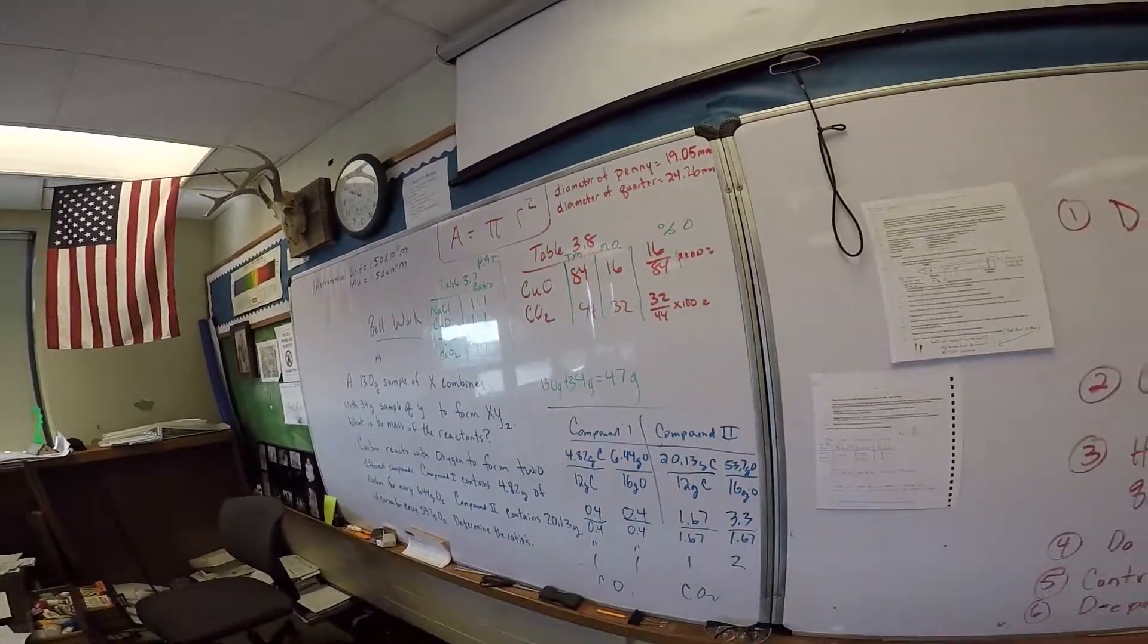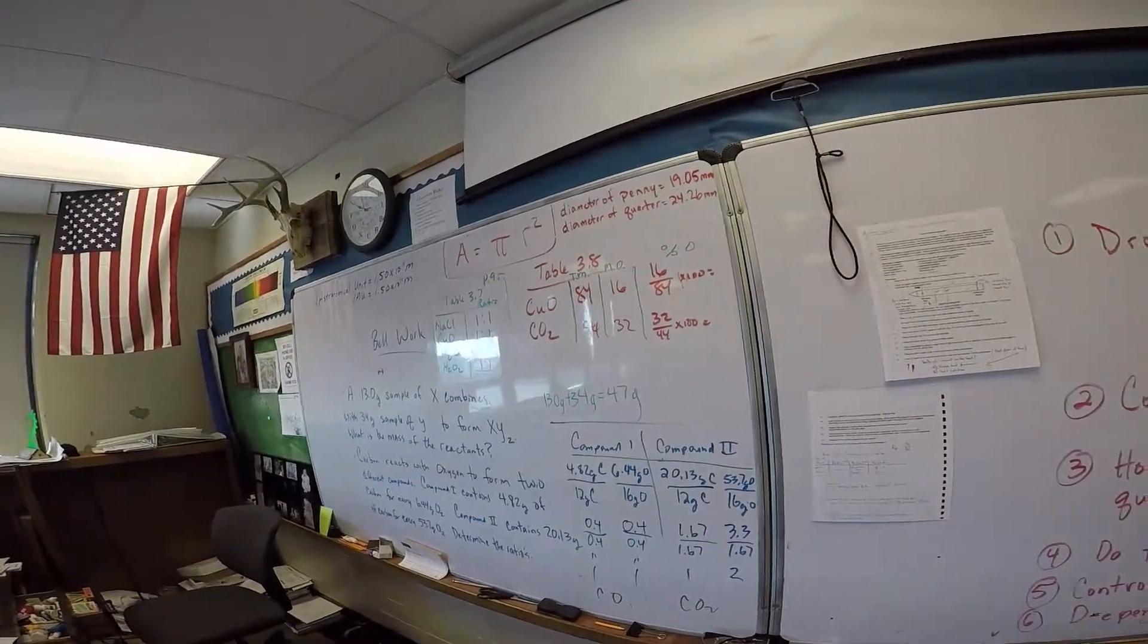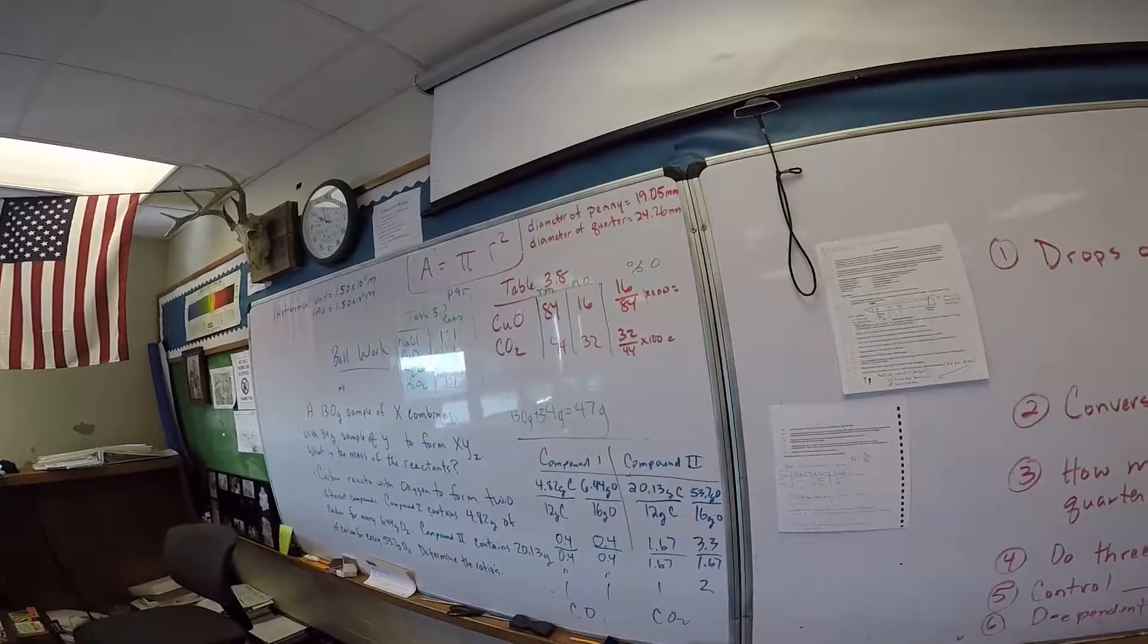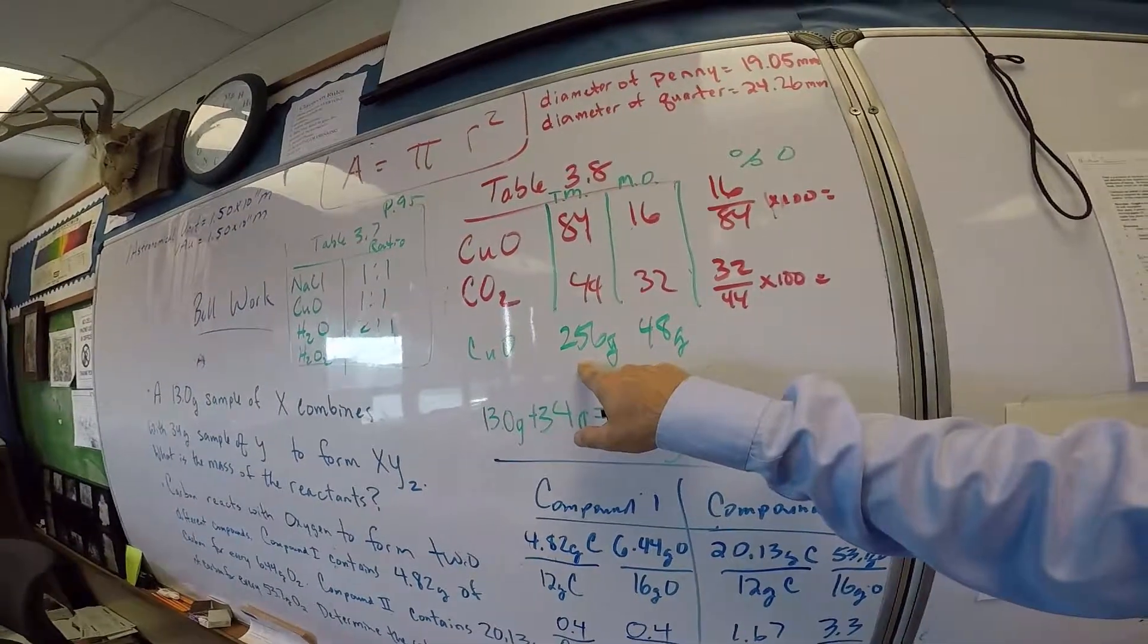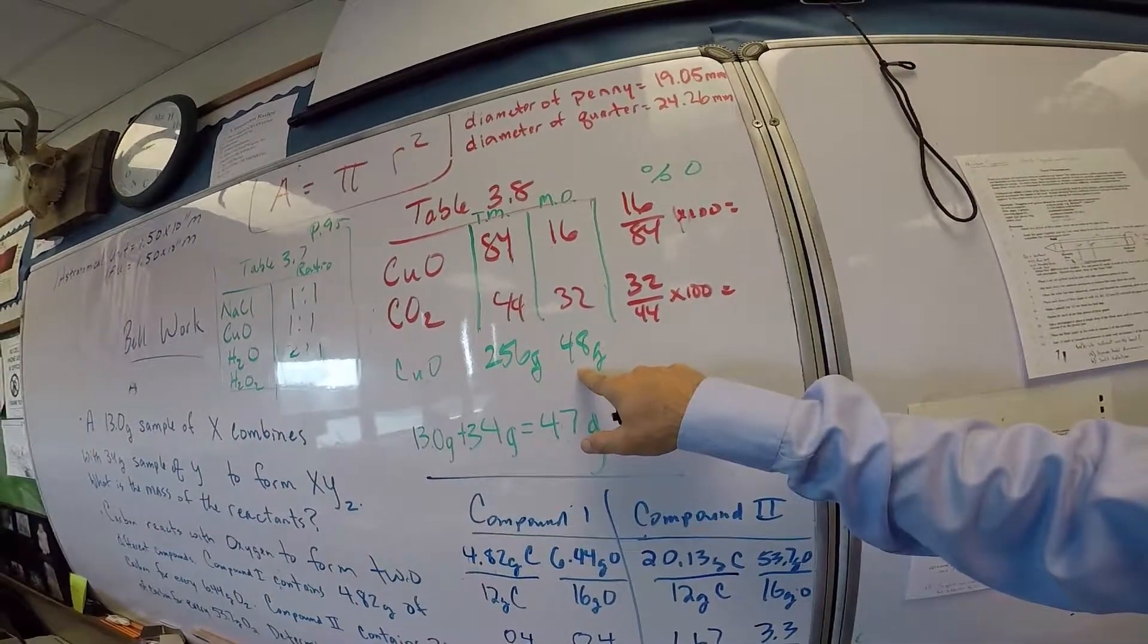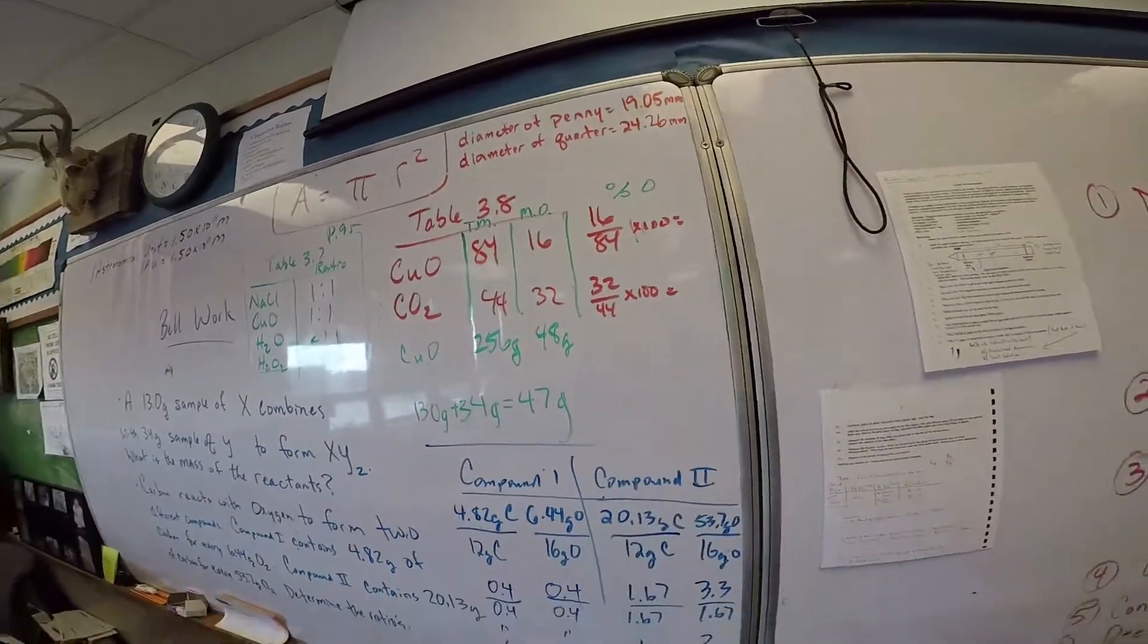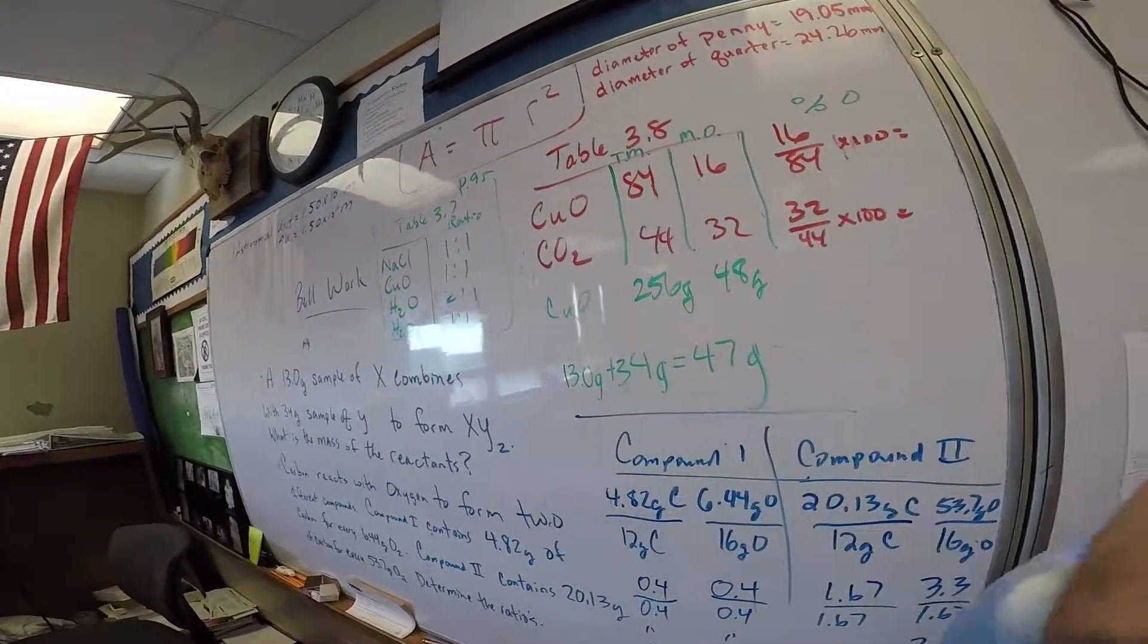It would show up differently or it would show up in the wild the same way if you had a substance you were trying to identify that it was unknown. So the substance, and you're trying to figure out what it is, and then you determine like 48 grams of it is oxygen, and you can determine the percent oxygen in the copper oxide.